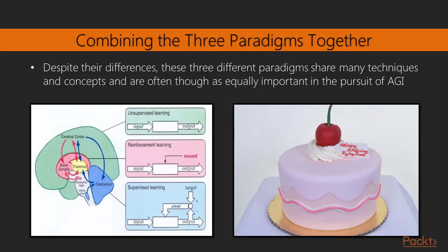So, despite their differences, these three different paradigms share many techniques and concepts and are often thought as equally important in the pursuit of artificial general intelligence. Current understanding of human learning within the brain is that in the cerebellum a sort of supervised learning is performed, in the basal ganglia a sort of reinforcement learning, and in the neocortex the learning is essentially unsupervised.